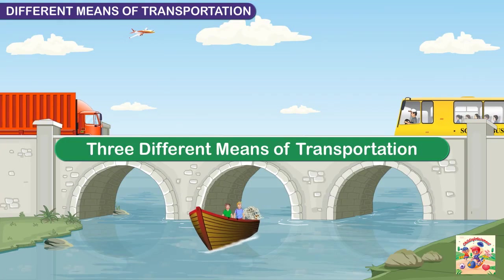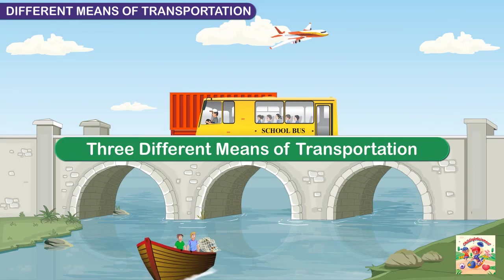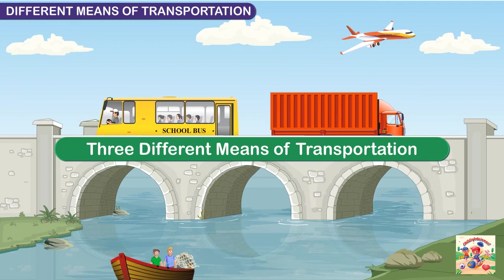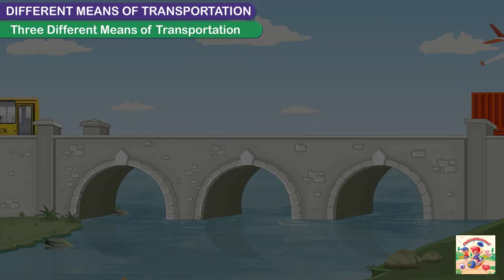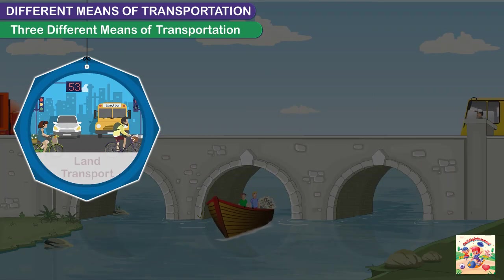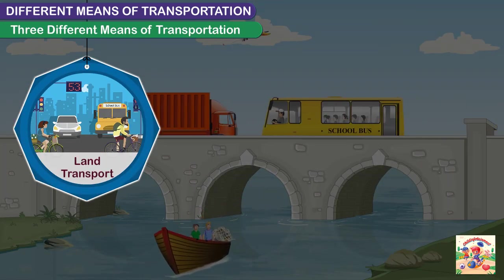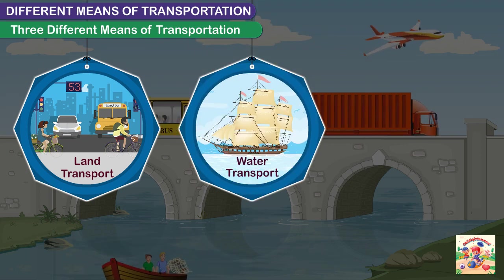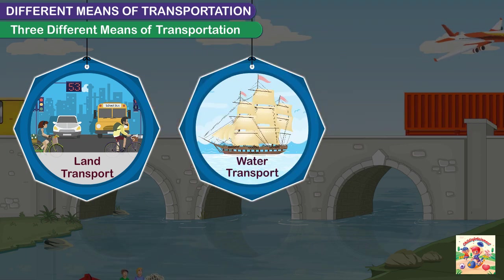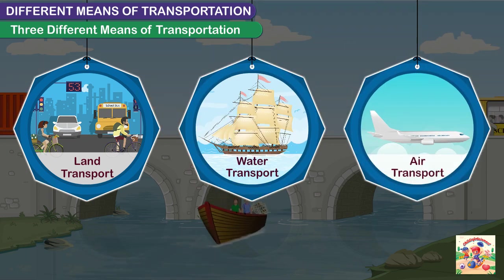There are three different means of transportation: land transport, water transport, and air transport.